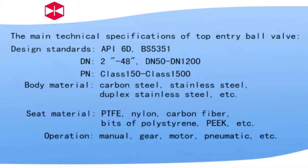The main technical specification of top entry ball valves. Design standard API 6D and BS5351. DN 2 inches to 48 inches. DN 50 to 1200. PN class 150 to class 1500.